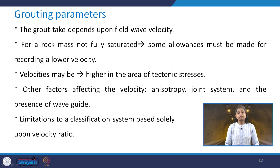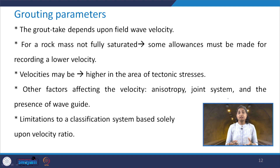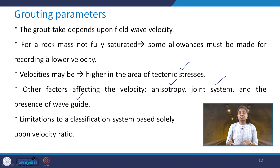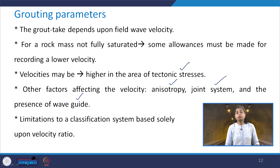The grout take depends upon the field wave velocity. For a rock mass which is not fully saturated, some allowance must be made for recording a lower velocity. There can also be a record of higher velocities in areas of tectonic stresses. Other factors which influence the velocity include anisotropy, joint system, and the presence of a wave guide. A classification system solely based upon the velocity ratio can be a major limitation in view of these influencing parameters.